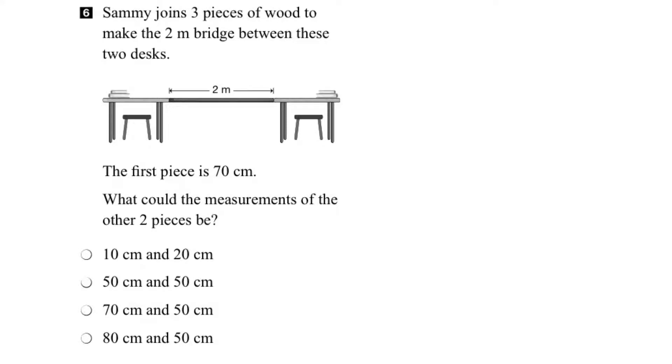In this question, we're told that Sammy makes a wooden bridge out of three pieces of wood. We're told that the first piece is 70 centimeters long, and what we have to figure out is what could the measurements be of the other two pieces.